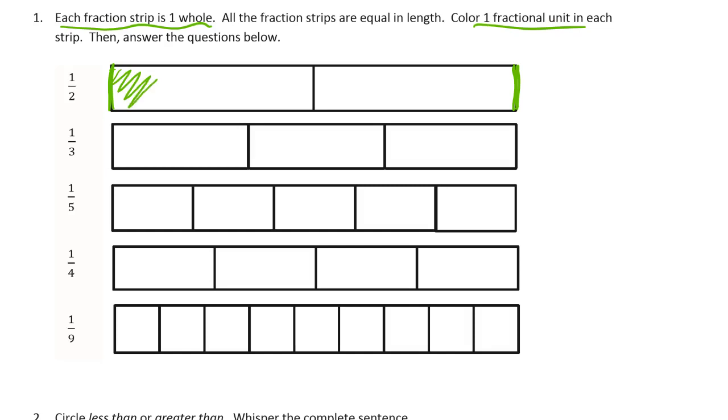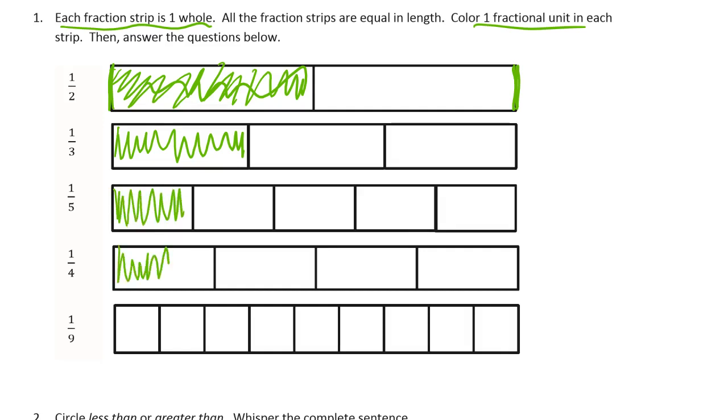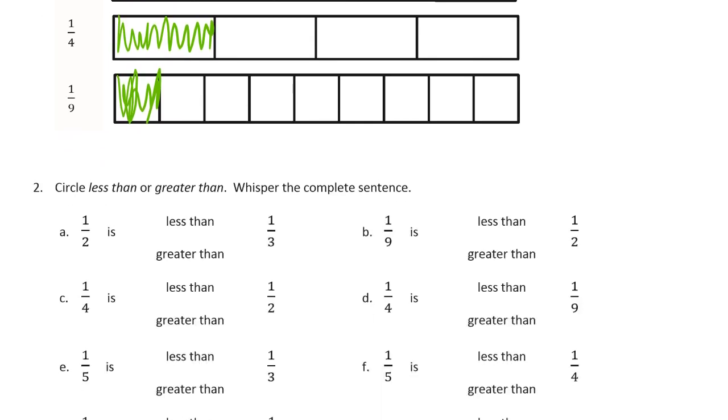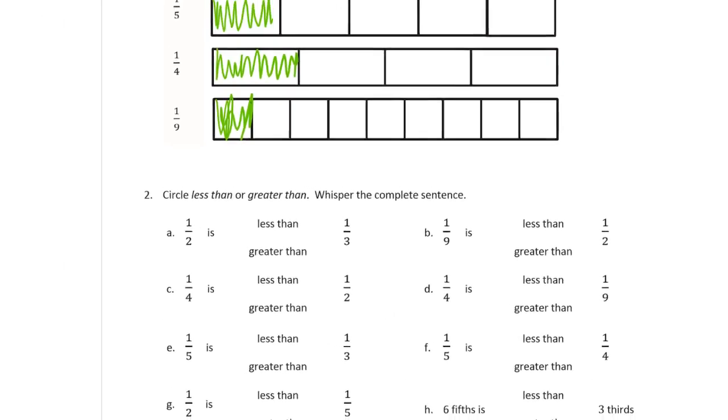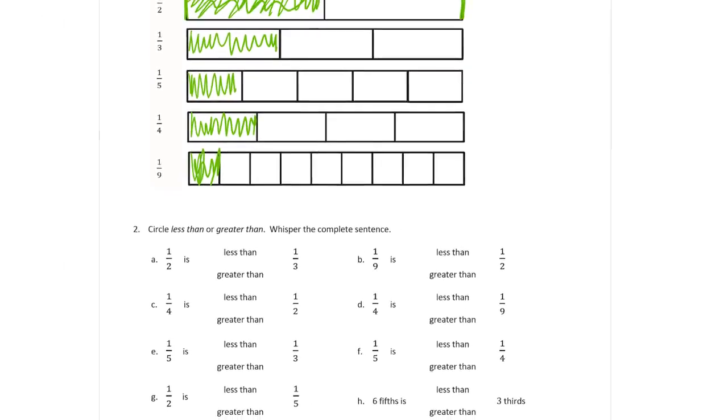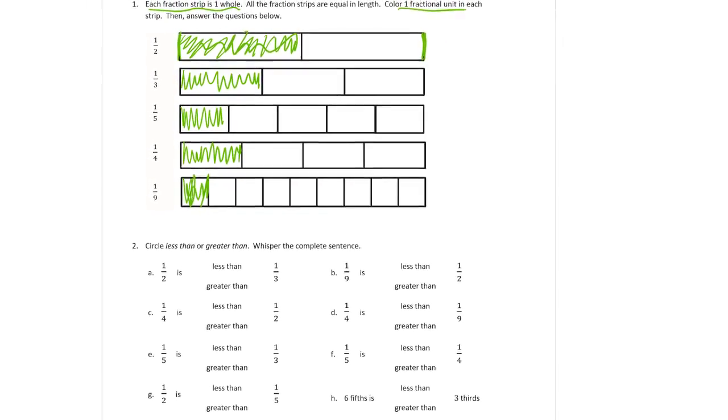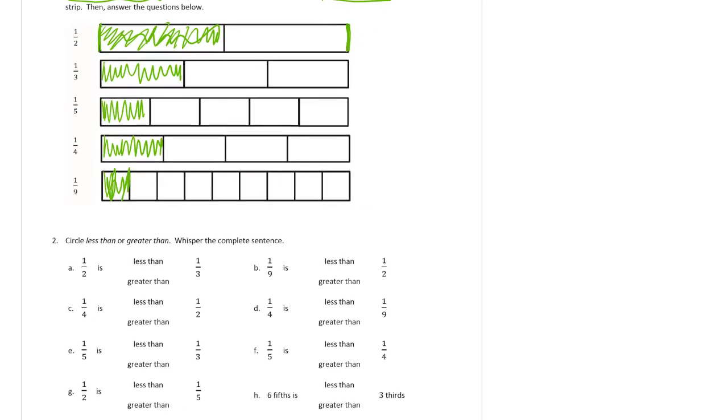So here we have color one fractional unit in each strip. These are halves, so I'm going to color in one of the halves. For the third, I'm going to color in one of the thirds. For the fifths, one of the fifths. The fourths, one of the fourths. And for the ninths, just one of those. Now we're going to use those pictures to help us.